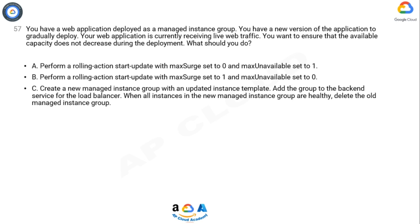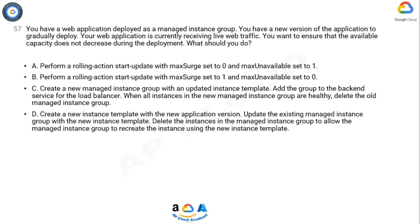Option C: Create a new managed instance group with an updated instance template. Add the group to the backend service for the load balancer. When all instances in the new managed instance group are healthy, delete the old managed instance group. Option D: Create a new instance template with the new application version. Update the existing managed instance group with the new instance template. Delete the instances in the managed instance group to allow the managed instance group to recreate the instances using the new instance template.